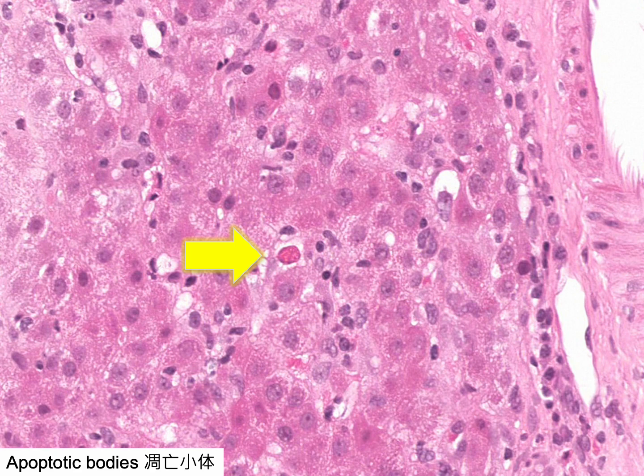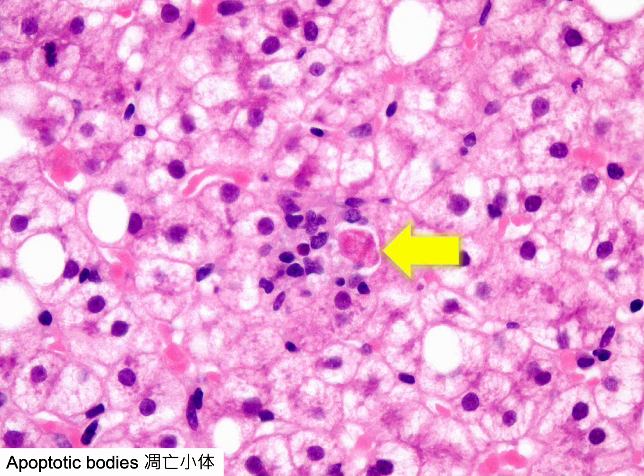Apoptosis, one of the two main forms of cell death, is characterized by cytoplasmic shrinkage, chromatin condensation and fragmentation, and the formation of cytoplasmic blebs and apoptotic bodies. An apoptotic body may be surrounded by a small cluster of mononuclear inflammatory cells. Apoptotic bodies are a nonspecific finding that can occur in a wide variety of acute and chronic liver diseases and may occasionally be observed in normal liver tissue.